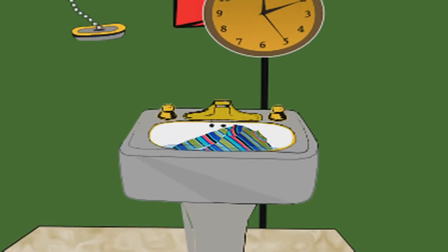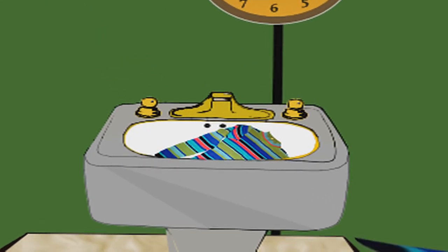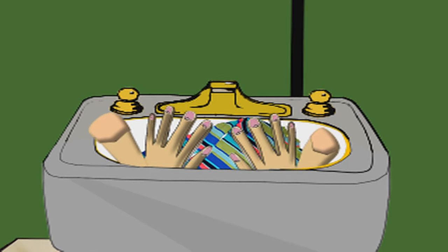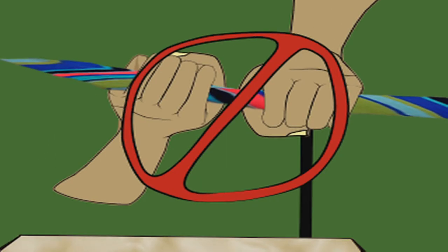Step 3. Let the water drain, but don't rinse out the sweater. When the sink is empty, gently press the sweater against the basin to remove any excess water. Do not wring it.